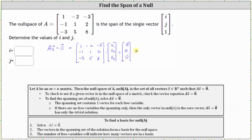Next, let's write the corresponding augmented matrix where the first row is one, negative two, negative three, zero. The second row is negative one, one, two, zero. The third row is negative three, five, eight, zero.